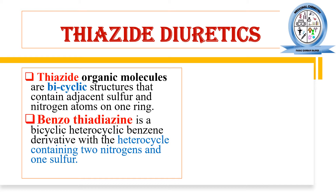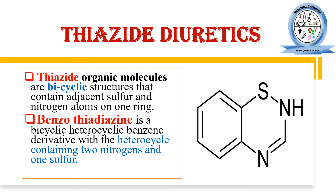All diuretics which contain the thiazide ring in their chemical structure are known as thiazide diuretics. Benzothiazide is a well-known example — it is a thiazide diuretic that contains a benzene ring fused with the thiazide ring. In this structure, you may observe that the benzene ring is fused with the thiazide ring, and sulfur and nitrogen are the two heteroatoms adjacent to one another.